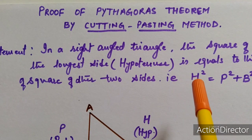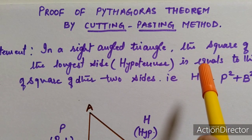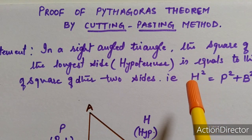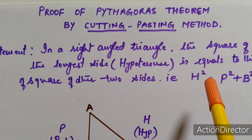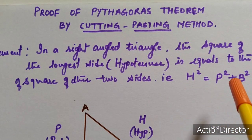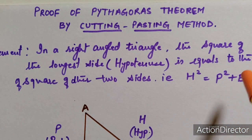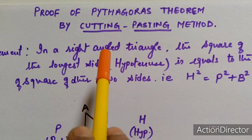That is, we can write it this way: hypotenuse square — that is the longest side squared — is equal to perpendicular square plus base square.